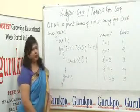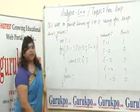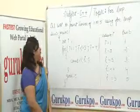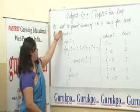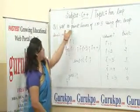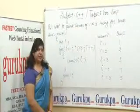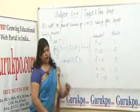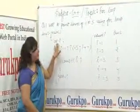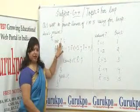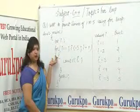Let us understand through a program how we can use this for loop. This is a simple program: write a program to print the series 1 to 5 using for loop. It means we need to print 1 to 5 using for loop. First, we have initialized the variable i, which is an integer value. Then we write the for loop.